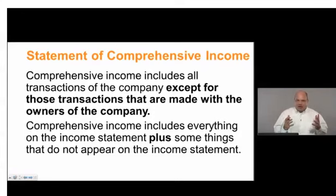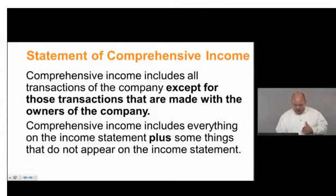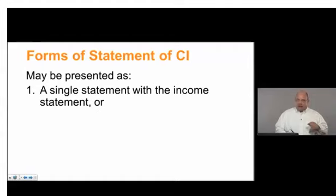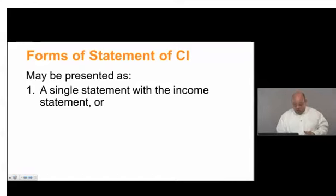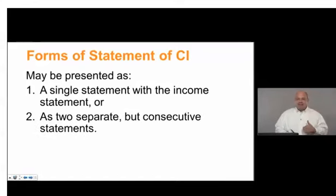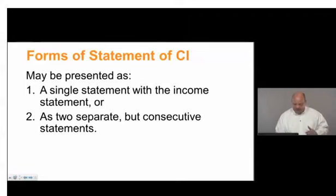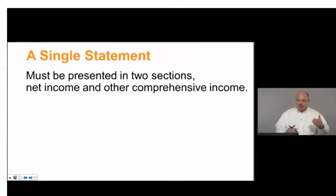The statement of comprehensive income includes everything except transactions with the owners. It can be presented in two ways: either as a single statement combined with the income statement — where it comes down to net income and then keeps going — or as two separate but consecutive statements, where we draw a line between net income and then the statement of comprehensive income.